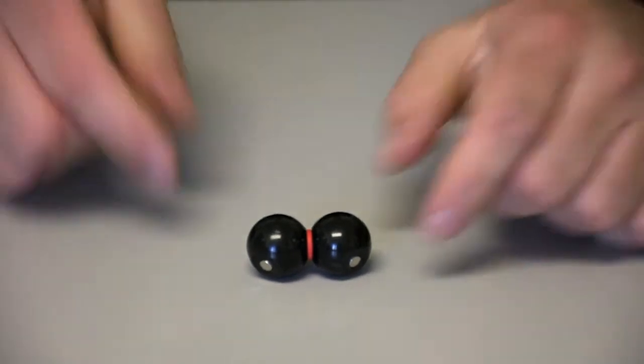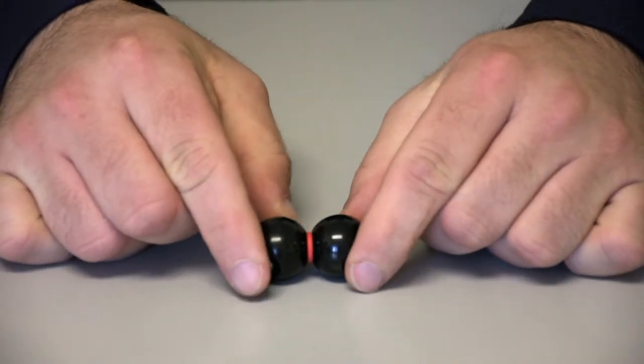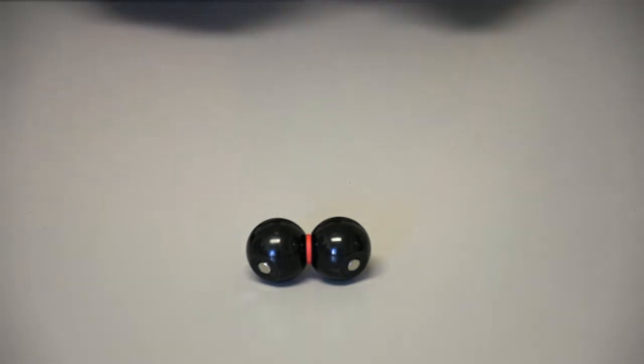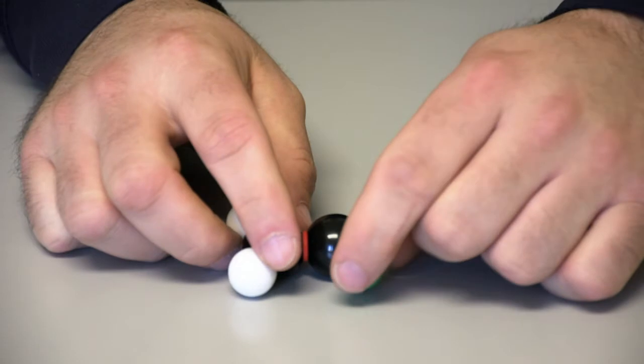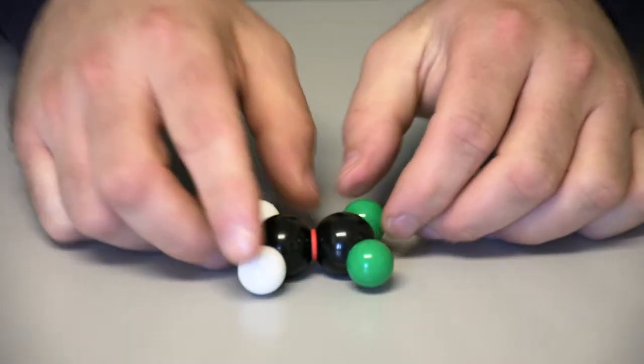No rotation can occur where a C double bonds to a C. We attach side groups to the alkene center. Using atom-magnetic parts, you can interconvert arrangements of the molecule very quickly.